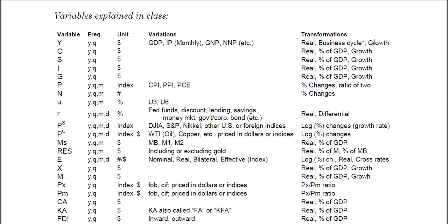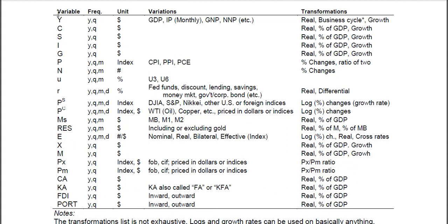A lot of times you can get the growth rate pretty straightforwardly — you take the percentage change or the log change in your real GDP, and that gives you the percentage change. So that's one of the biggest macro variables. My table is set up to show the variable, the frequency, the units, different variations, and then what you can do with it.